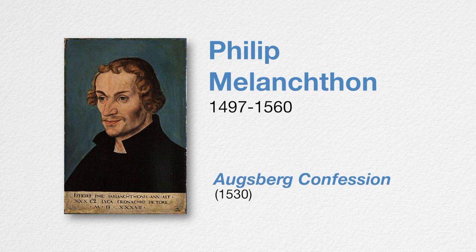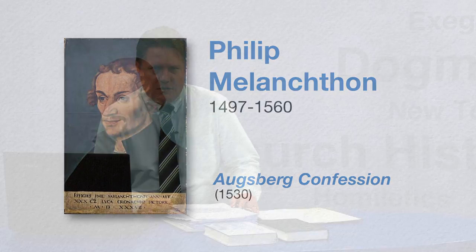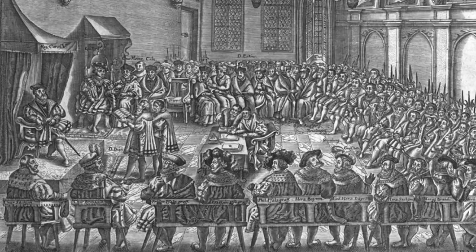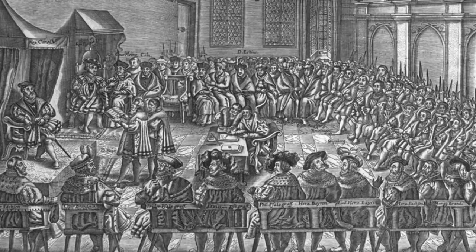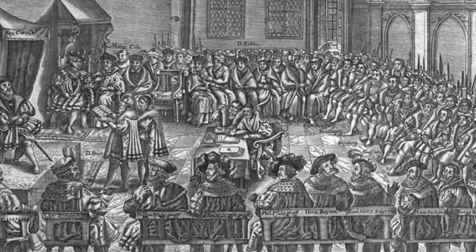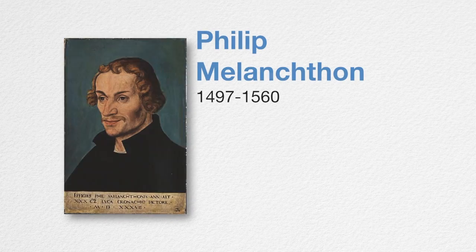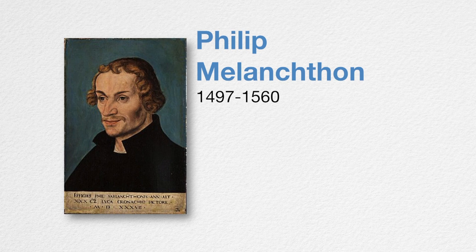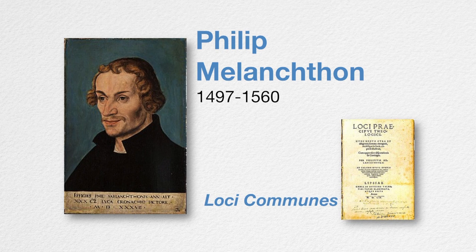Melanchthon also wrote what is known as the Augsburg Confession, presented in 1530 — an important profession of Lutheranism. Martin Luther did not present it himself before the emperor because he was afraid of being arrested and burned at the stake, so Philip Melanchthon, who wrote the Augsburg Confession, delivered it to the emperor and the princes of Europe on Luther's behalf. This brilliant person, long-time friend of Martin Luther, produced this systematic portrayal of Lutheran doctrine in the Loci Communis, first published in 1521.